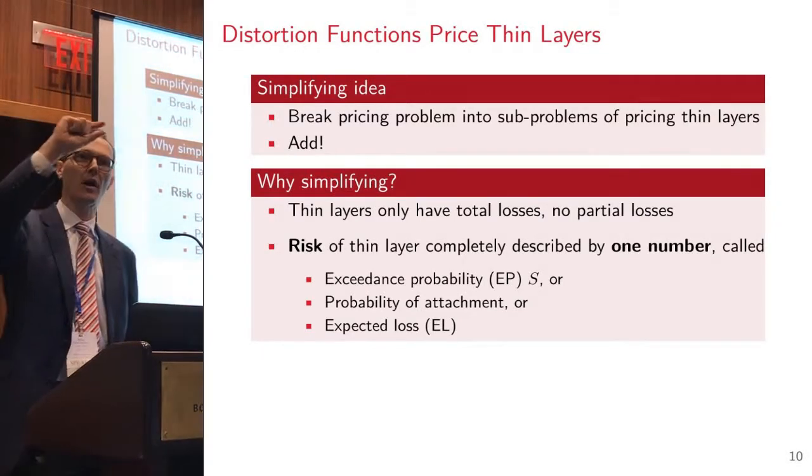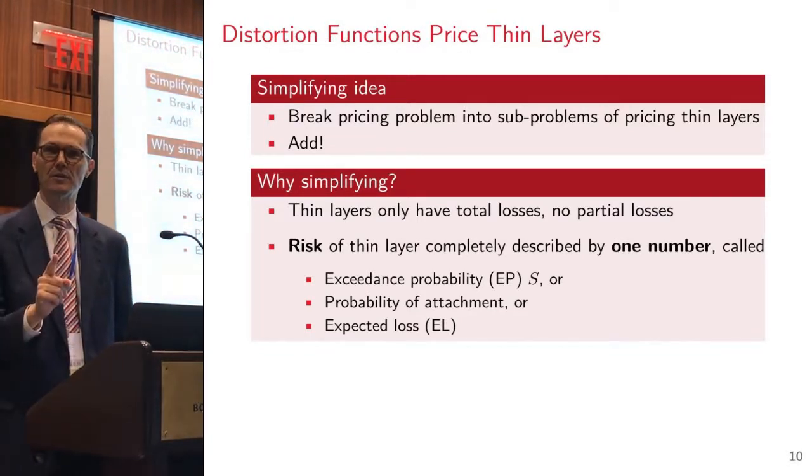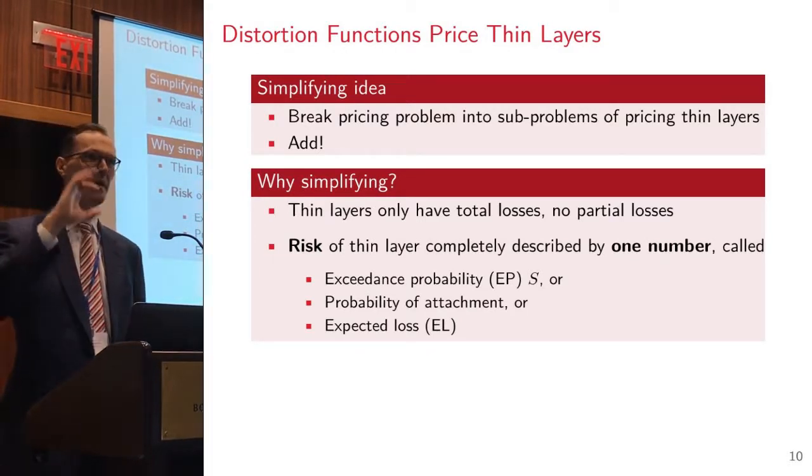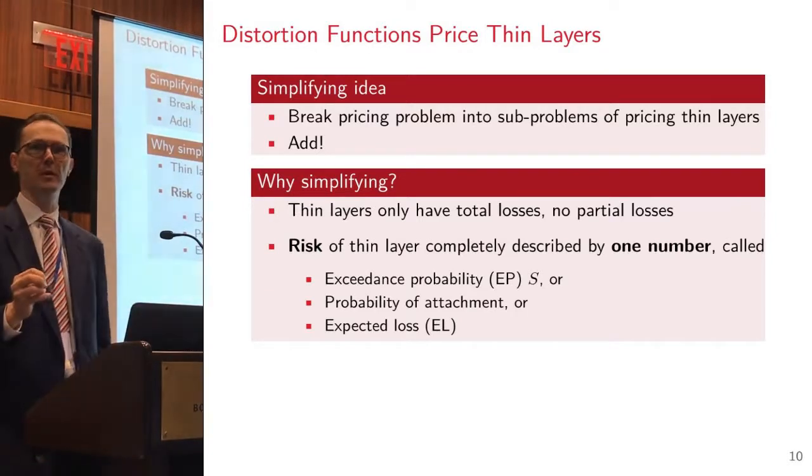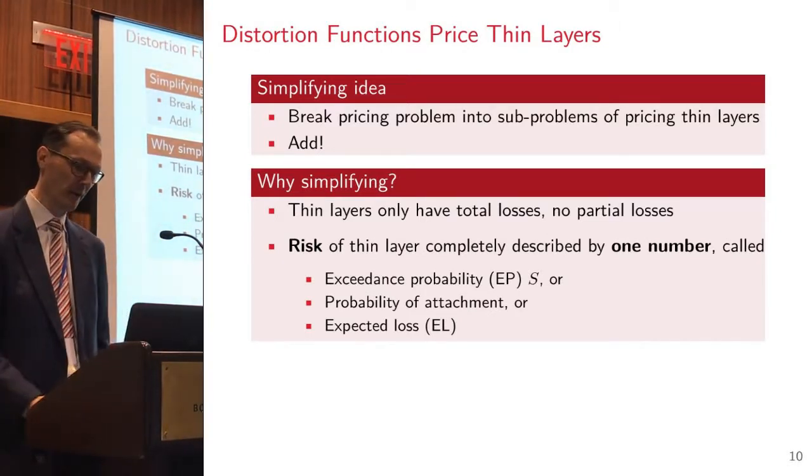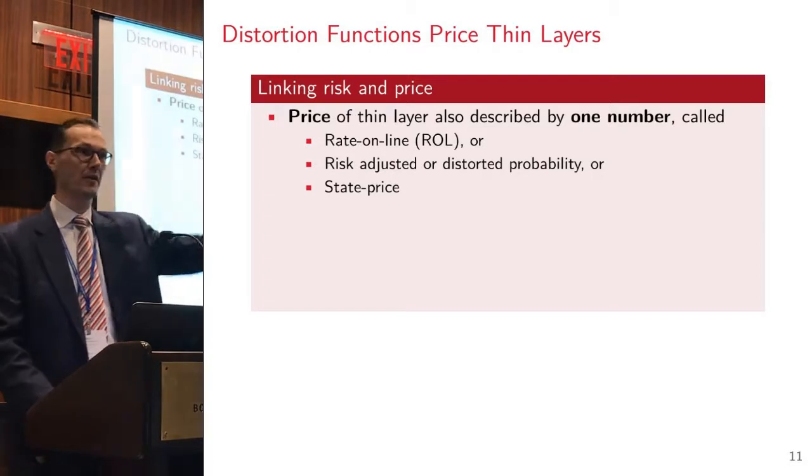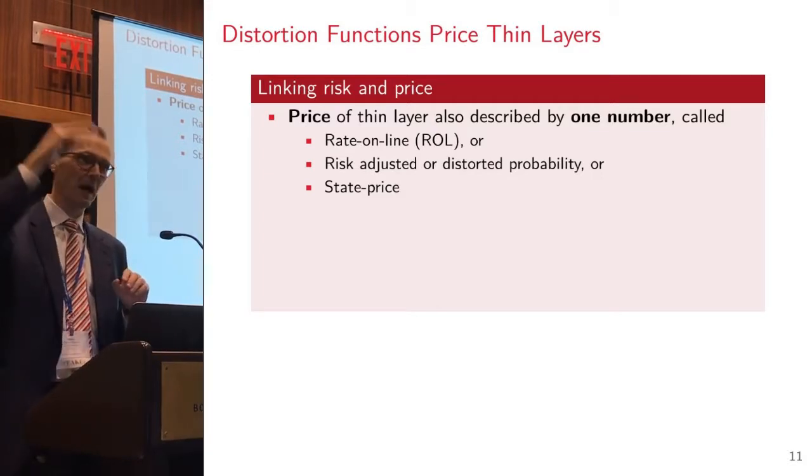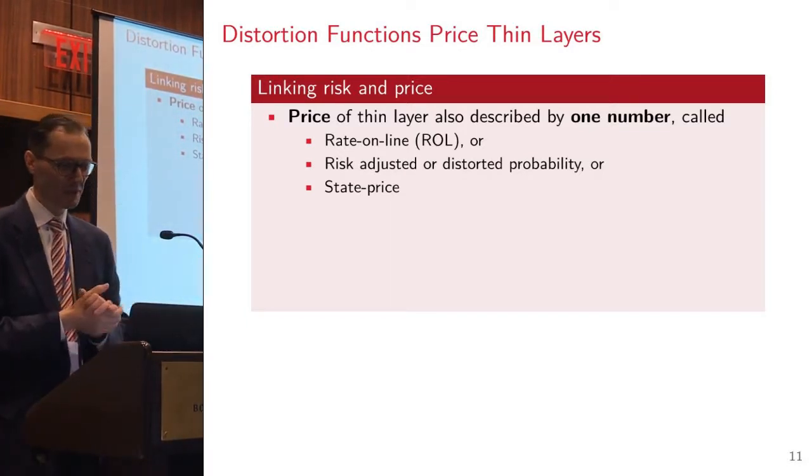The joy of this is that if I'm dealing with a very thin layer, I'm writing an excess of loss for you that's one dollar excess of a million, I can characterize the risk of that layer with one number. It's just the probability that layer attaches. I can completely characterize the risk of that event simply by knowing the probability that it attaches. That's basically the only risk that you can do that with. Any other risk is going to need more descriptors.